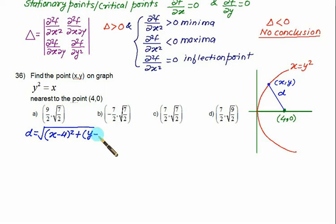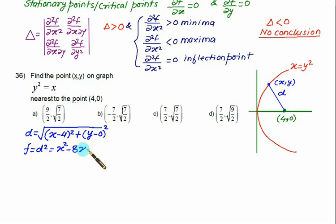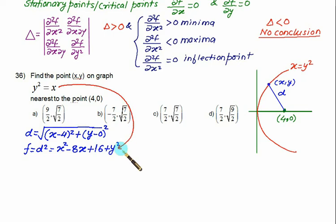The distance formula is given as √((x₂−x₁)² + (y₂−y₁)²), which becomes √((x−4)² + (y−0)²). So we define f = d² = x² − 8x + 16 + y². Since y² = x, we can replace y² with x.